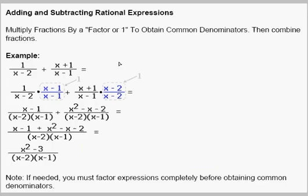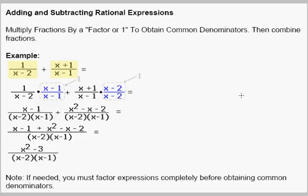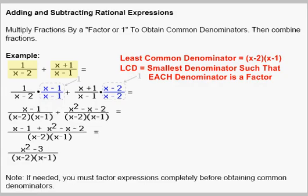Now we're going to look at adding two rational expressions. In our example, we're adding 1 over x minus 2 to x plus 1 over x minus 1. To do this, we have to get the same denominator in both rational expressions — just like adding 1 half plus 1 third requires a common denominator of 6. The least common denominator, or LCD, is the smallest denominator such that each denominator is a factor. Here x minus 2 is a factor and x minus 1 is also a factor, so our LCD is x minus 2 times x minus 1.